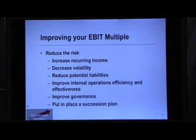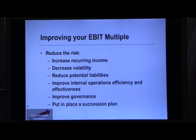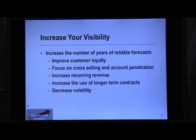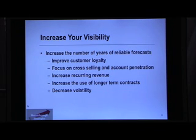Since we know it's about risk and visibility, we can work on both of these elements of the net present value formula. We can dramatically reduce risk by putting in better systems, better governance, better internal operations, and performance measuring and monitoring. We can look to increase recurring revenue, decrease volatility in the business, and try to reduce any potential liabilities. From a visibility point of view, we're interested in finding higher probabilities for future earnings — so longer-term contracts, more recurring revenue, greater customer loyalty, and reducing volatility and instability in the business will get you longer-term visibility of earnings.